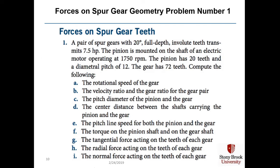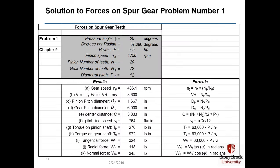Here is a practice problem. A pair of spur gears with 20-degree full depth involute teeth transmits 7.5 horsepower. The 20 degrees is the pressure angle. A pinion is mounted on the shaft of an electric motor operating at 1750 RPM. The pinion has 20 teeth and a diametral pitch of 12, so the gear also has a diametral pitch of 12. The gear has 72 teeth. You are asked to compute parameters from (a) the rotational speed of the gear through (i) the normal force acting on the teeth. I've prepared a spreadsheet showing inputs and step-by-step calculations.